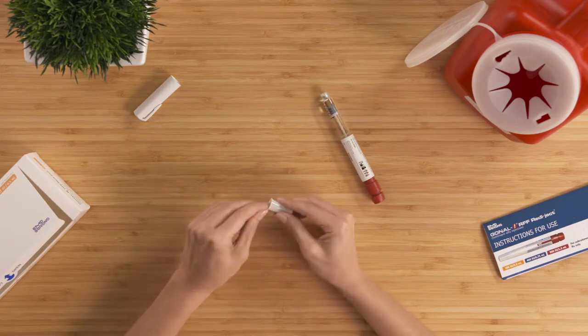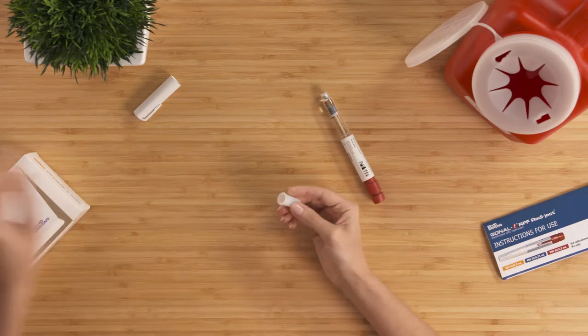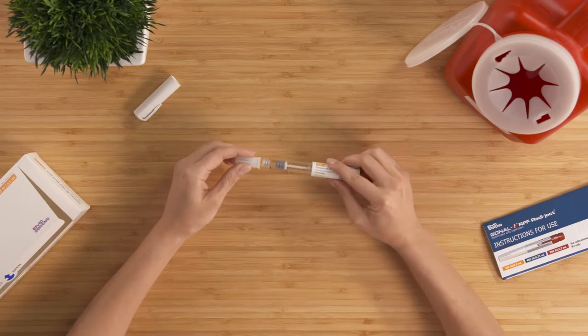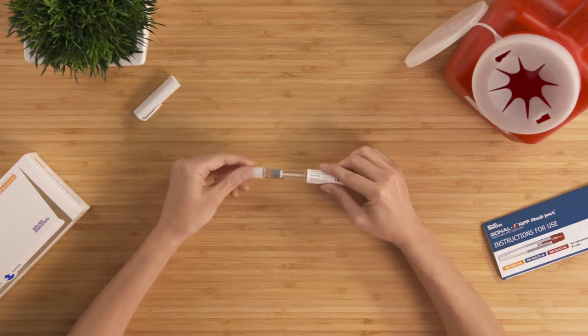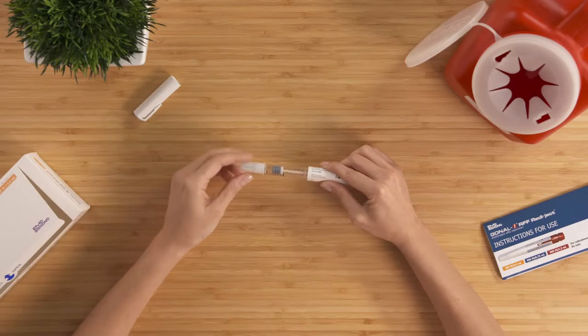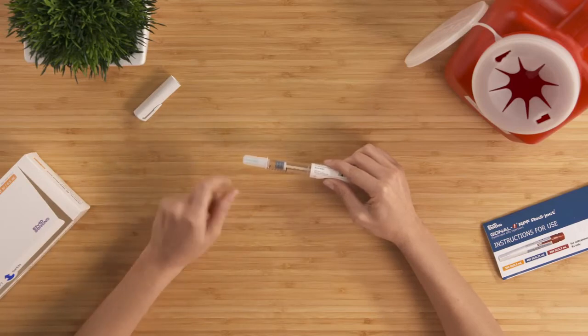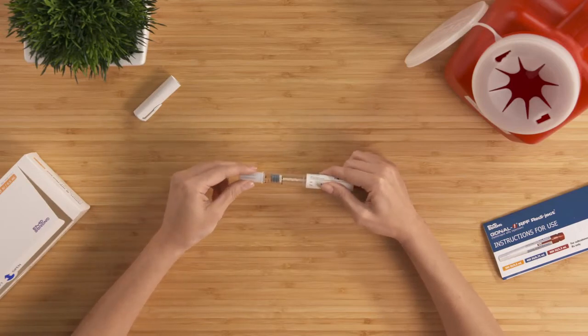Now, peel off the needle seal. Push the needle onto the clear plastic end of the pen, and twist the needle until you cannot twist it anymore. One point of caution. Don't attach the needle too tightly, otherwise the needle could be difficult to remove after the injection.